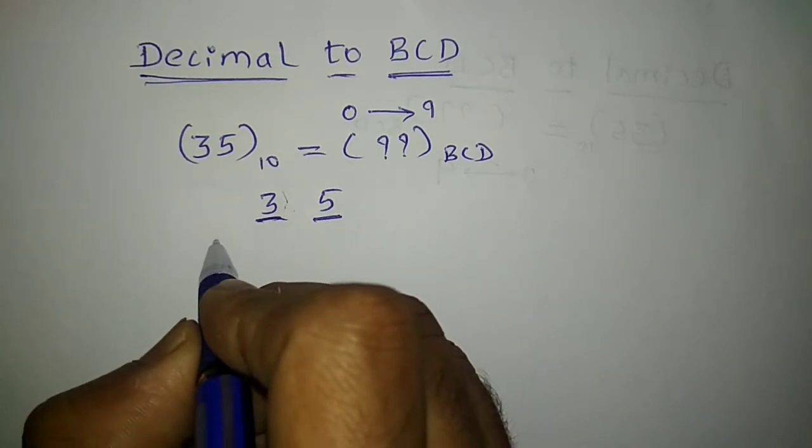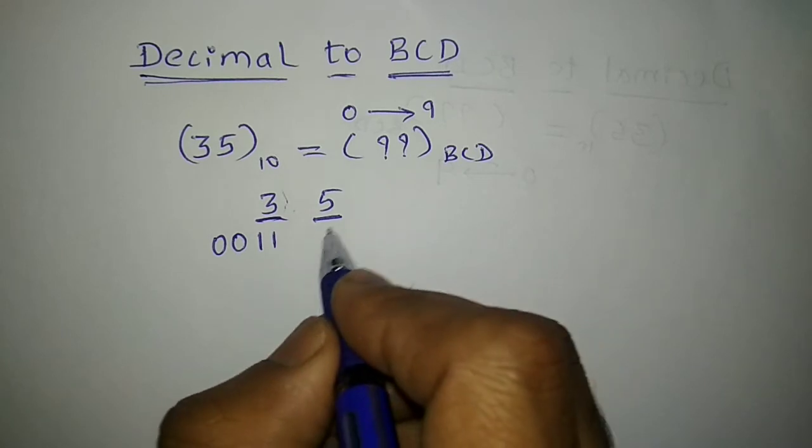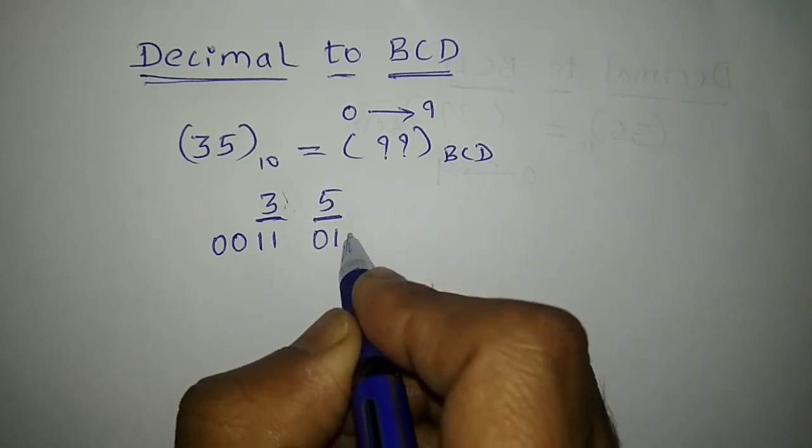So equivalent of 3 is 0011 and equivalent of 5, binary equivalent of 5, we know it is 0101.